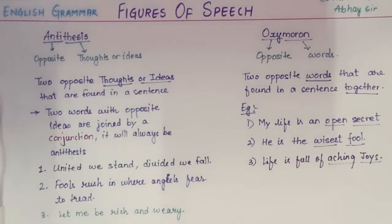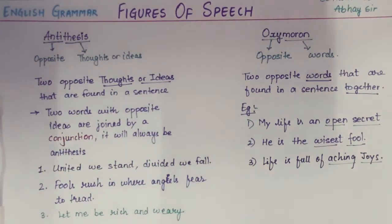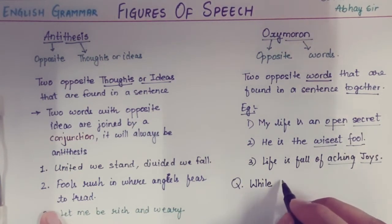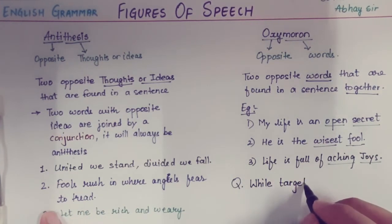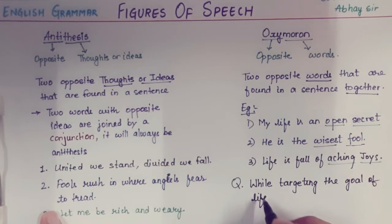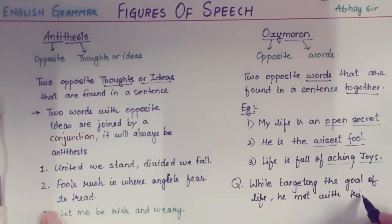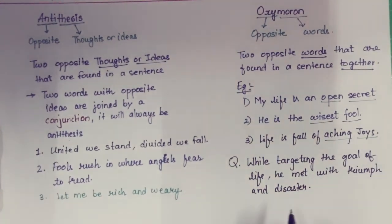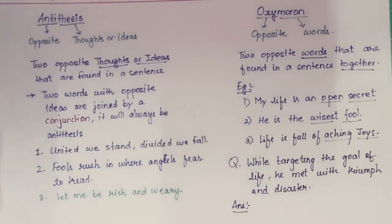Now let me give you another example and you have to decide whether this is antithesis or oxymoron — write the answer in the comment section. The question is: 'While targeting the goal of life, he met with triumph and disaster.' Write down the answer in the comment section. Thank you.